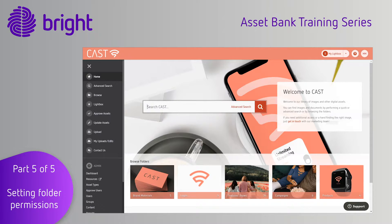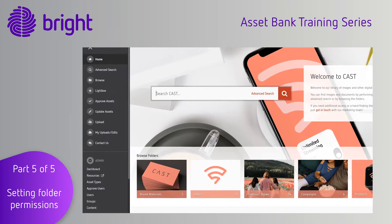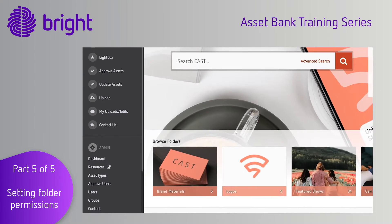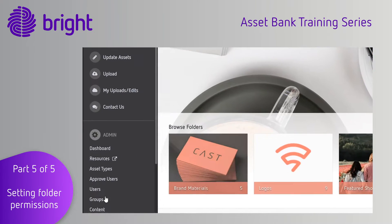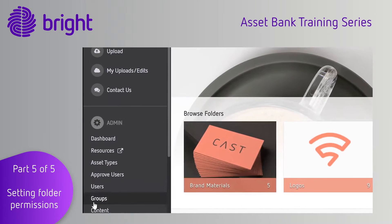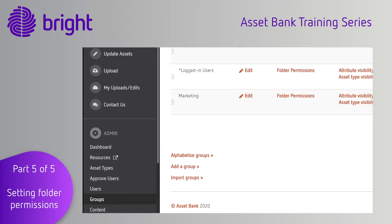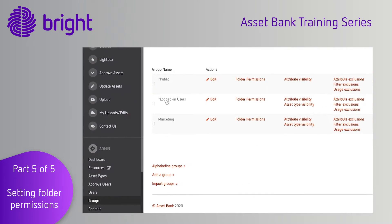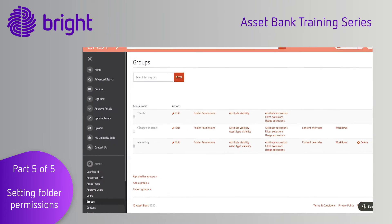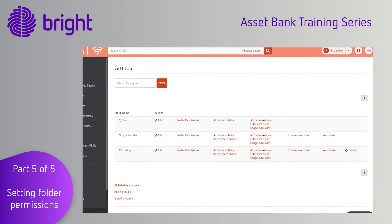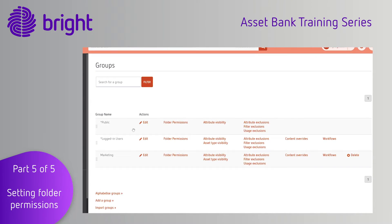To edit user group permissions, click on the Groups tab under the Admin menu. Here you will see your different user groups. The Public Group and Logged In Users are default groups in the system that you can use to set your baseline permissions.